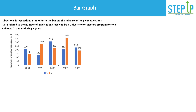The data given says: refer to the bar graph and answer the given questions. The data is related to the number of applications received by a university for a master's program, for two subjects A and B, during five years — 2004 to 2008. For example, in 2004, subject A received 210 applications whereas subject B received 140 applications.